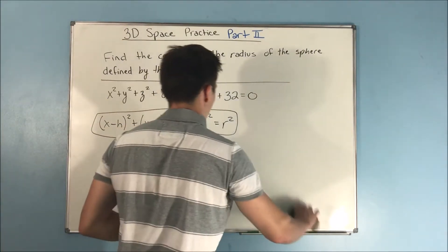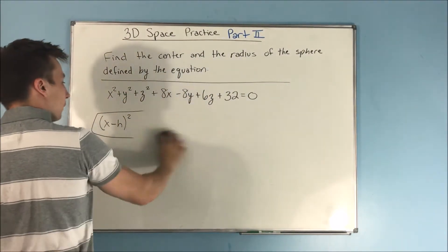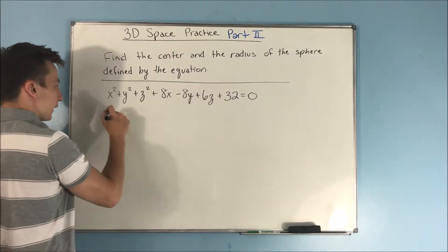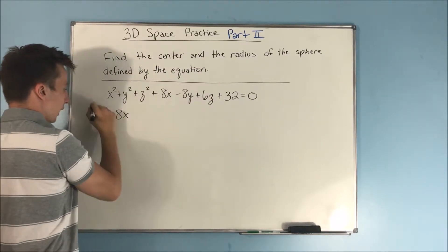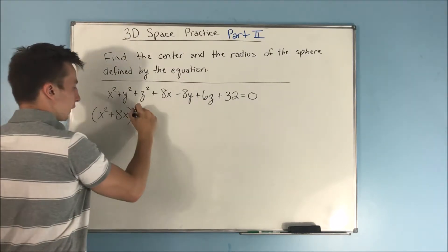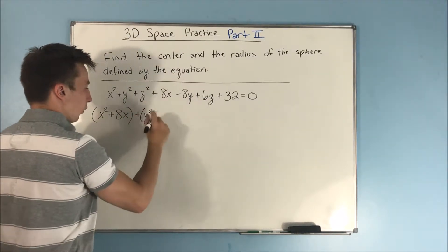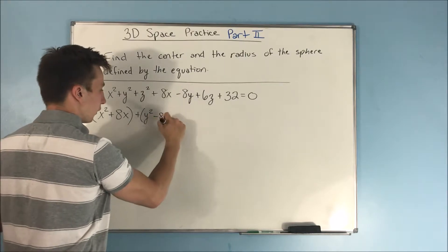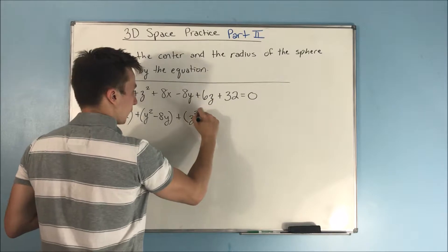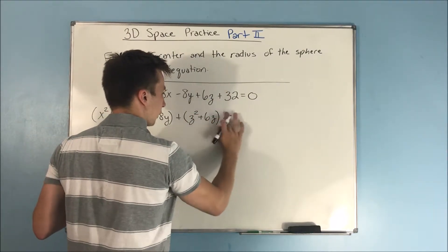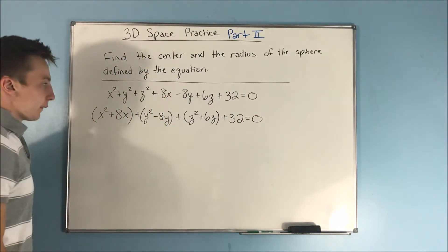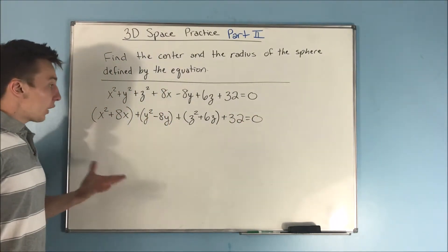The only difference now is that we're going to complete the square not two, but three times. So let's kind of group this. This becomes a lot easier. We have x²+8x. We'll get our X terms together. Let's get our Y terms together. And let's get our Z terms together. We have z²+6z. And we also have a +32 here.